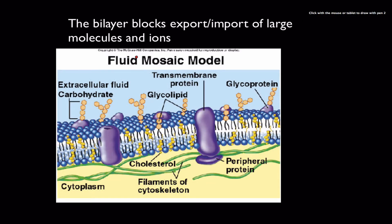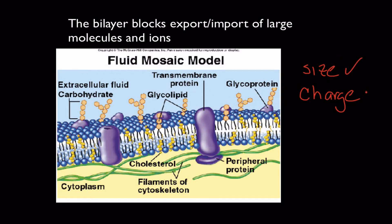The purpose of the bilayer is to control what enters and exits the cells. What can go into and out of a cell depends on two factors: size and charge. How big is the ion, atom, or molecule? Does it carry a charge — positive or negative? If the molecule is large or has a charge, it probably can't get through the phospholipid bilayer unless it goes through a specially built gate. The bigger and more charged it is, the less likely it is to pass through.